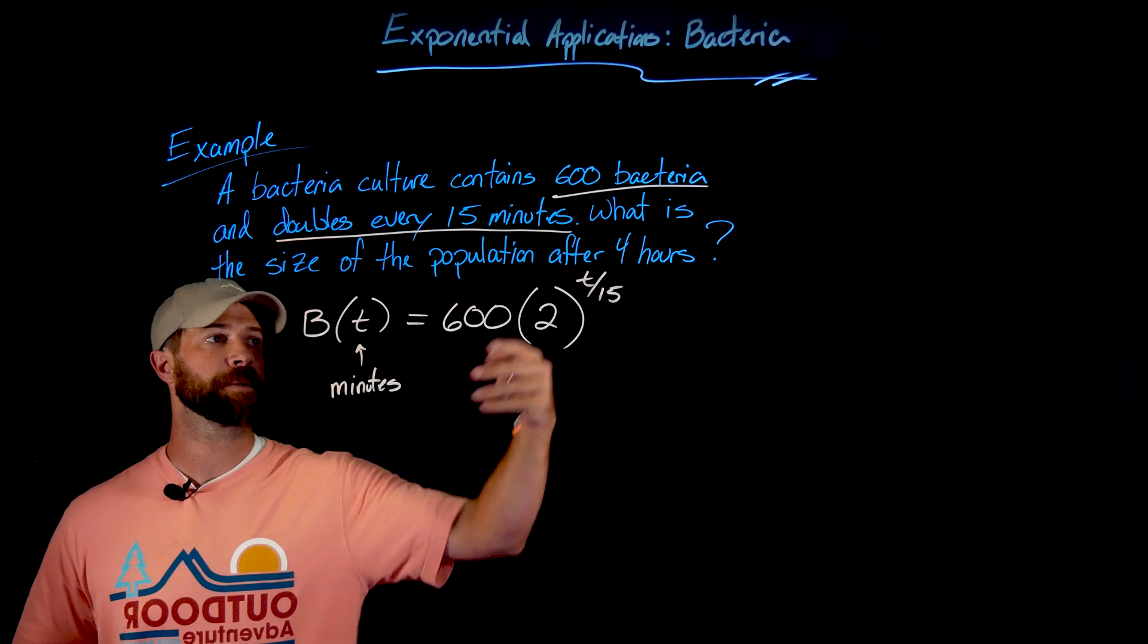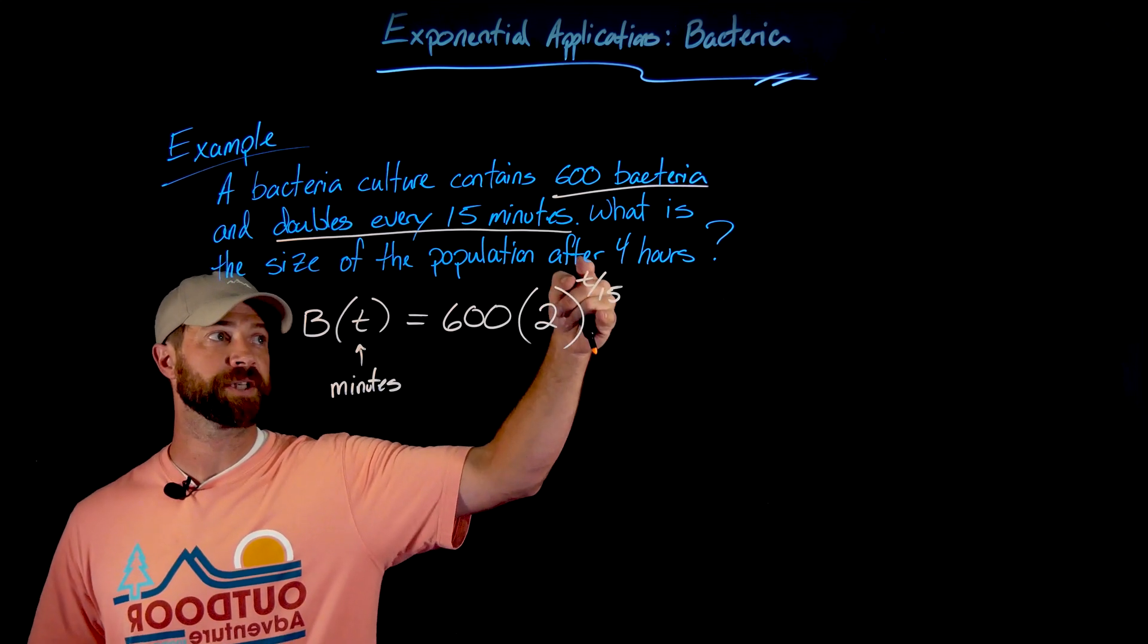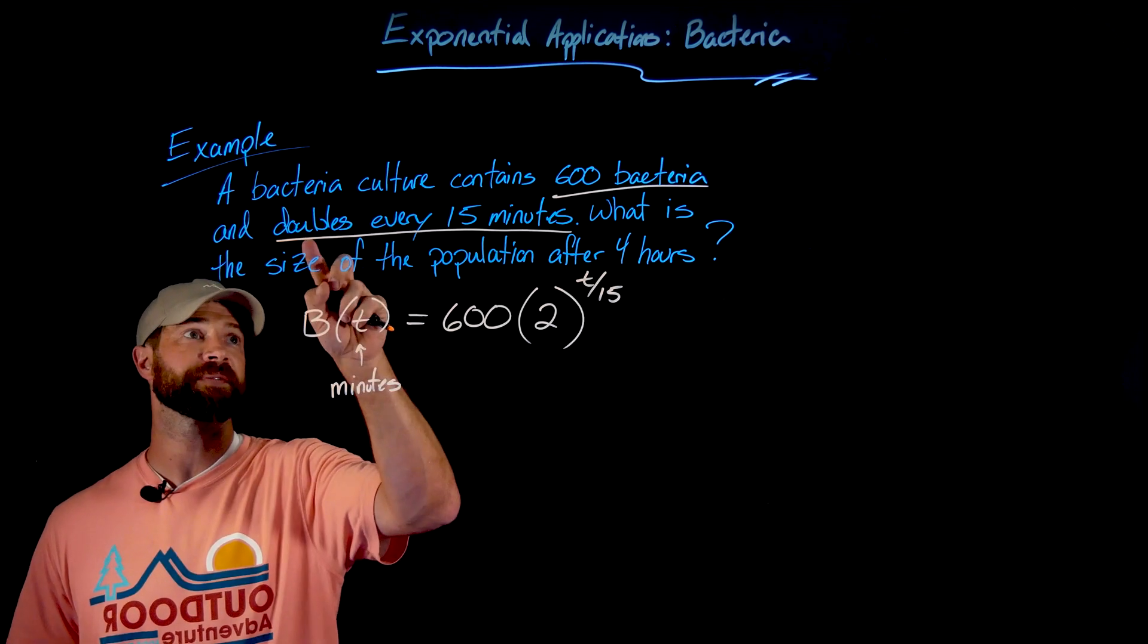Or if you put some multiple of 15, like you put t equals 30 here, this would be 30 divided by 15, would be 2. It would have applied the doubling twice, which is what we expect if it doubles every 15 minutes.